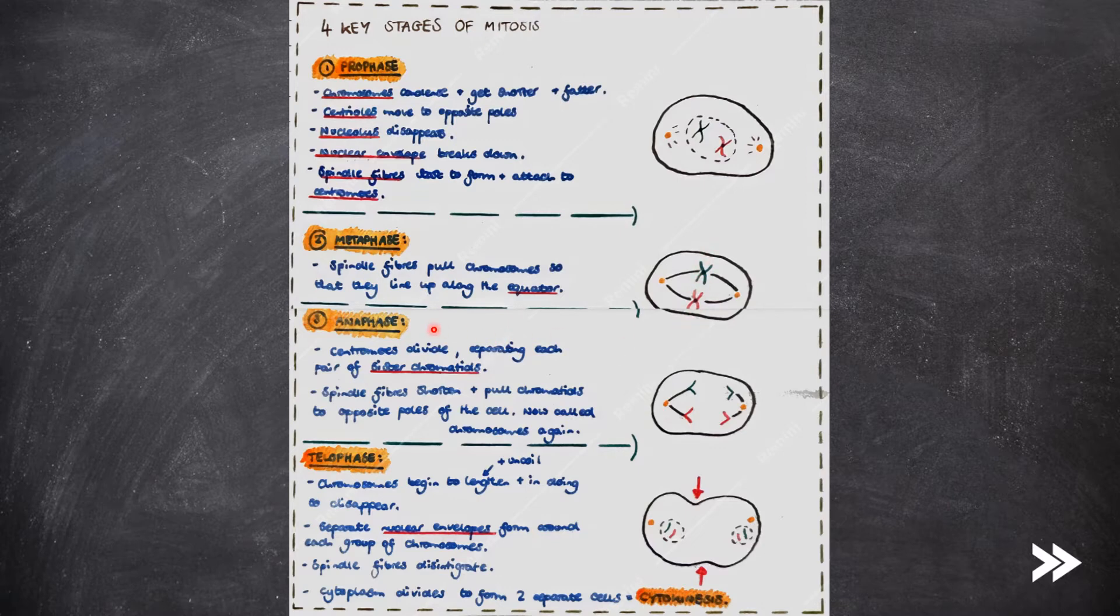Then we have anaphase. In anaphase, the centromeres divide, separating each pair of sister chromatids. The spindle fibres shorten and in doing so pull the chromatids to opposite poles of the cell. They are now referred to as chromosomes again.